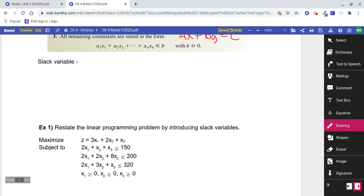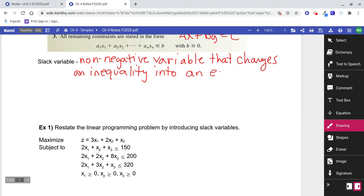Now, a slack variable, this is going to be really important. The slack variable is a non-negative variable that changes an inequality into an equation. This is really important. We're going to utilize something called a slack variable so that we can turn our inequalities into equations. We need equations to be able to do what we're about to do. So let me give you an example.